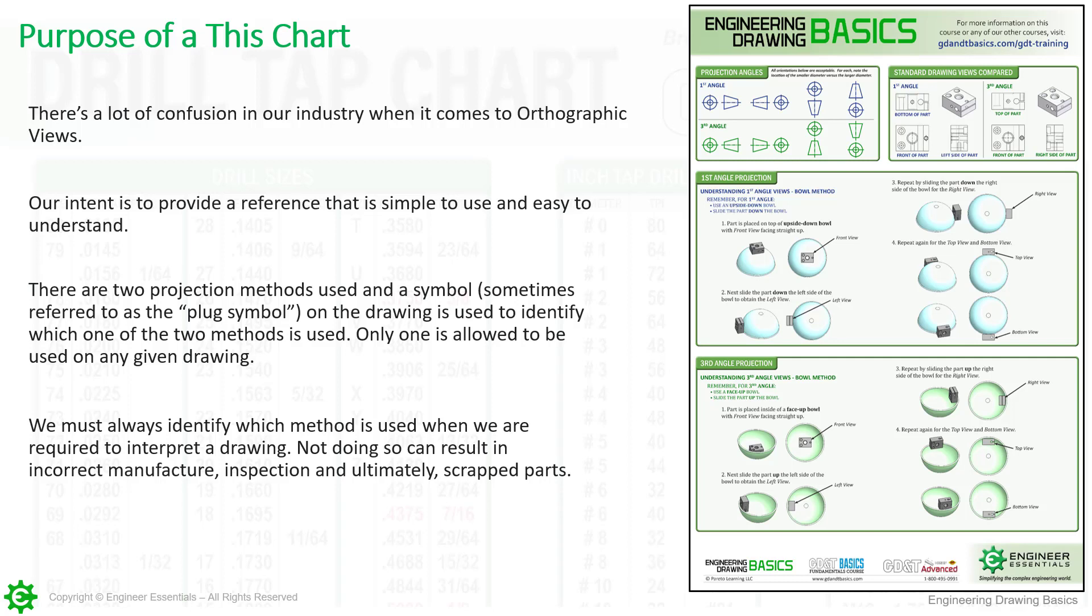There are two projection methods used in the world on drawings. On that drawing, there should be a symbol. You won't always find it. Some companies will put it into a design standard or in the notes. It is preferred to have it on the drawing itself. That way, the interpreter has it readily available and doesn't need to go to another document to find out what that projection is. It is identified with a symbol, which started its life called the plug symbol, but we just call it the projection angle symbol now. There are only two methods, and fortunately, only one can be used on a drawing. So that eliminates 50% of the confusion. Still, we have to identify what it is, but we're not allowed to mix the two projection methods.